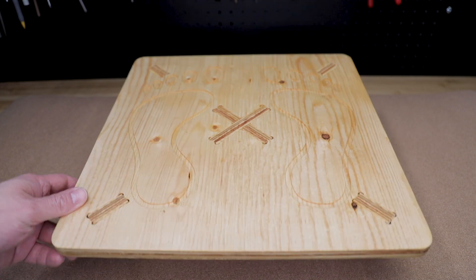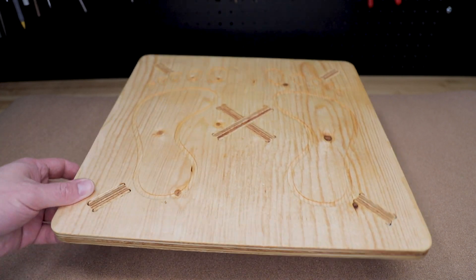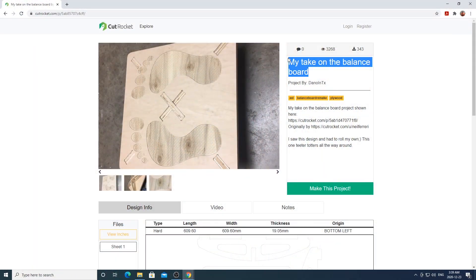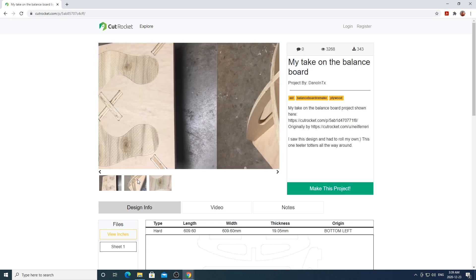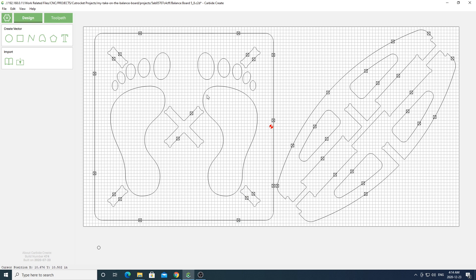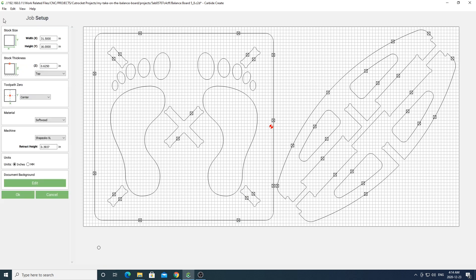Last but not least I'm going to give this plywood wobble board project a try. Like before links to download this project will be in the description box below. Go ahead and open up your file in Carbide Create. Like always you'll want to go into the settings area and change the settings to whatever you require. Just a note that the original project is set up for three quarter inch plywood where mine has been downscaled to five eighths plywood because that was the plywood I had on hand already.